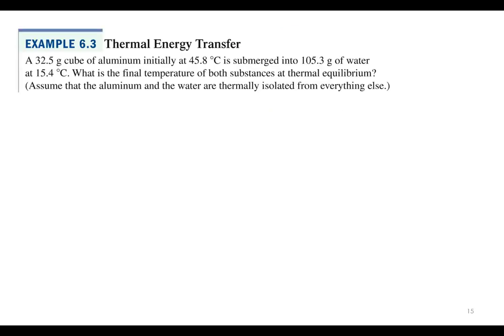Let's try this out. Example 6.3: a 32.5-gram aluminum block initially at 45.8°C is submerged into 105.3 grams of water at 15.4°C. What is the final temperature of both substances at thermal equilibrium? We're solving for T_sub_f. We'll have two equations that both equal each other, so we solve for T_sub_f directly.